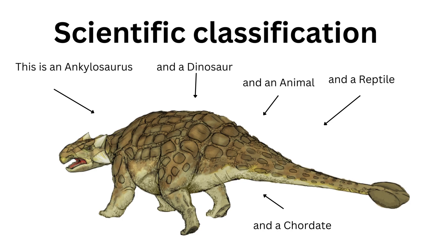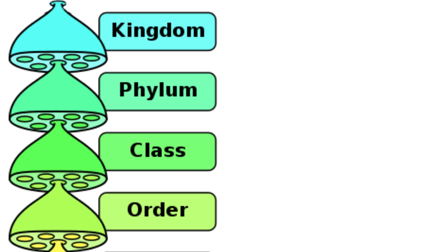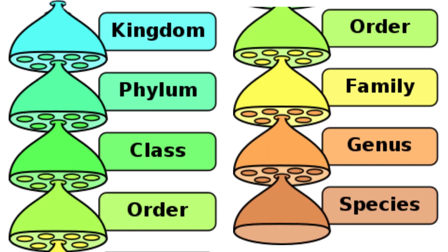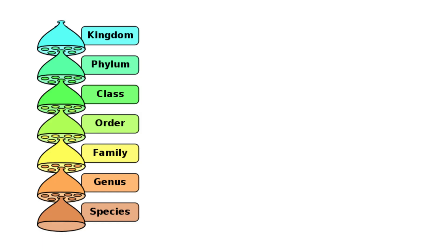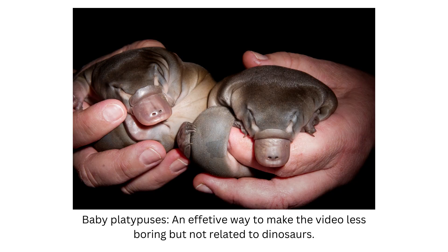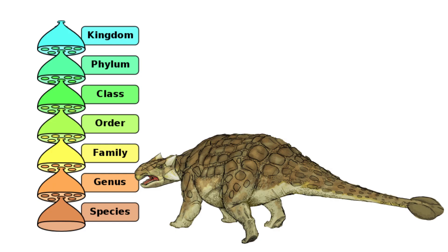Scientific classification, also known as biological classification or taxonomy, is a hierarchical system used by scientists to organize and categorize living organisms based on their evolutionary relationships. It helps to group similar organisms together and provides a standardized way to name and classify them.